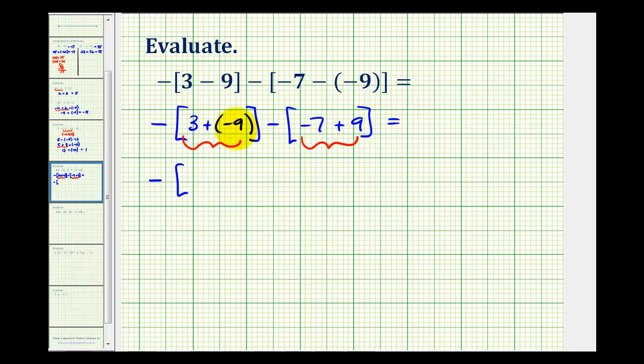Well, positive 3 plus negative 9 would be negative 6. And then negative 7 plus 9 would be positive 2.